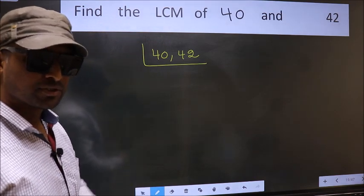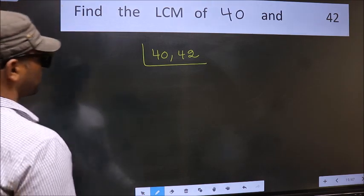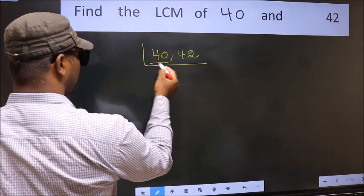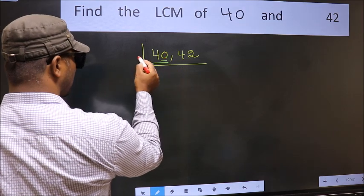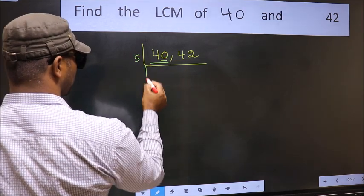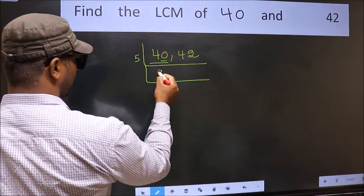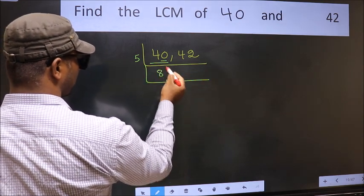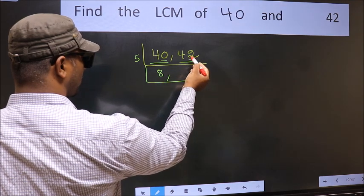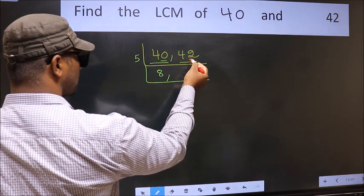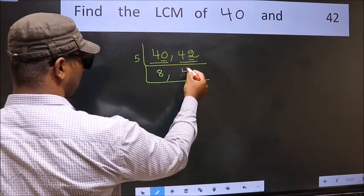Now you should focus on the first number, which is 40 here. For this number, last digit is 0, so directly take 5. When do we get 40 in the 5 table? 5 times 8 is 40. The other number, 42, last digit is neither 0 nor 5, so this is not divisible by 5. So we write it down as it is.